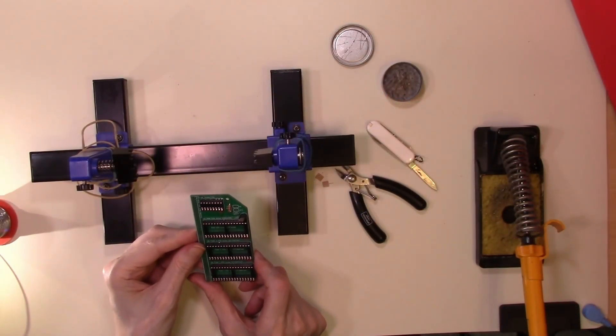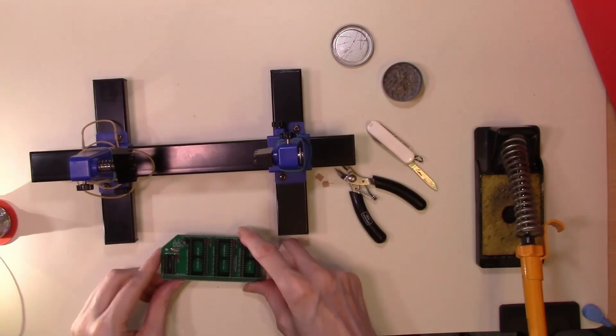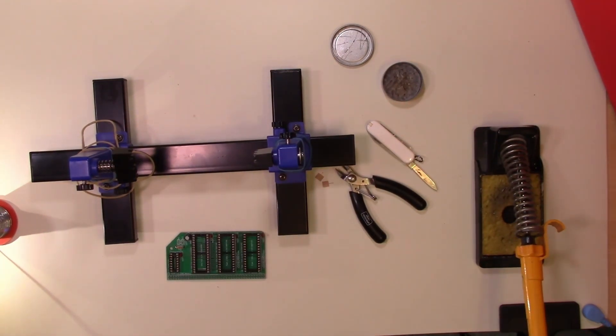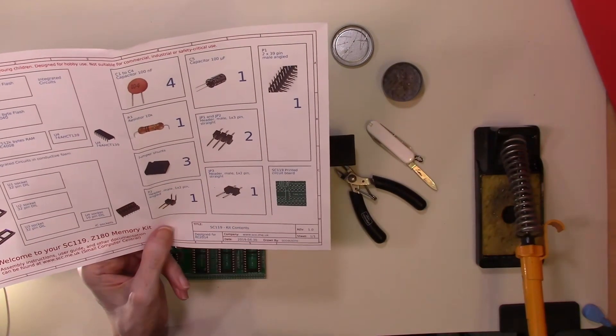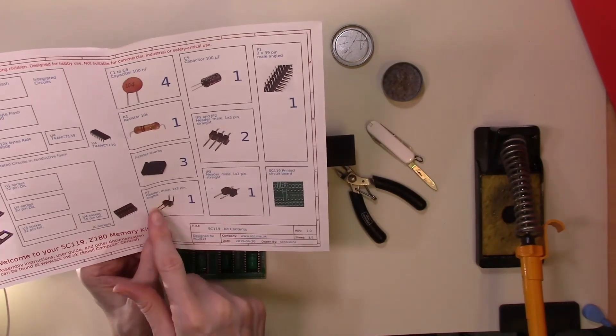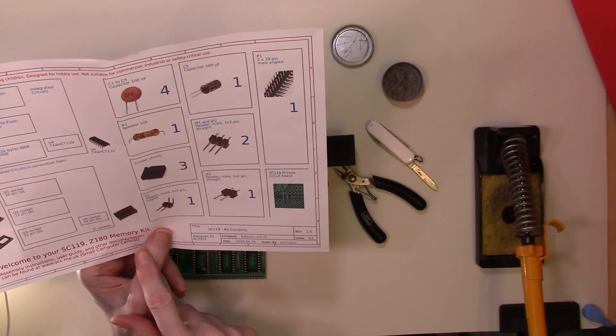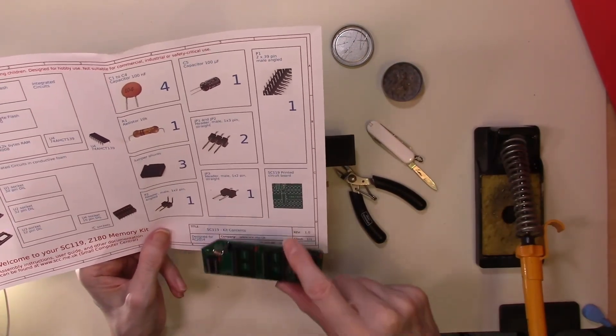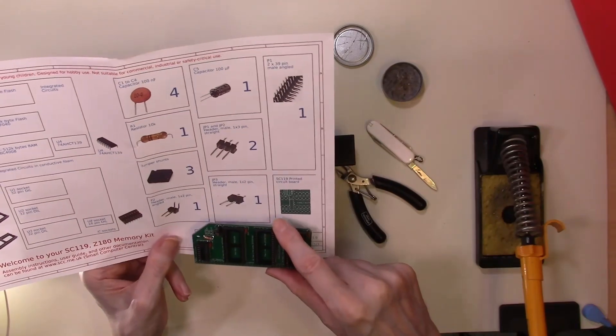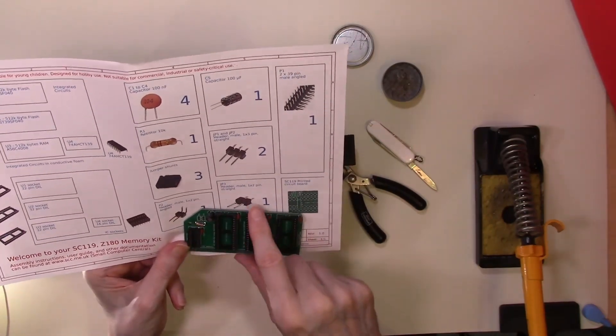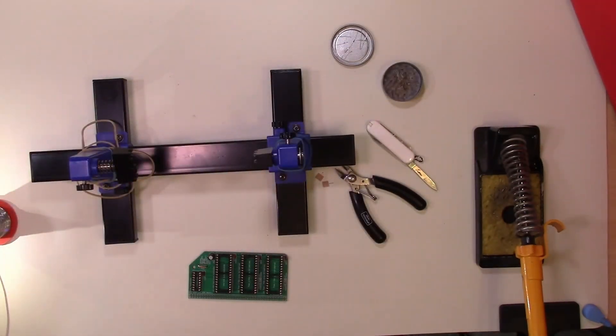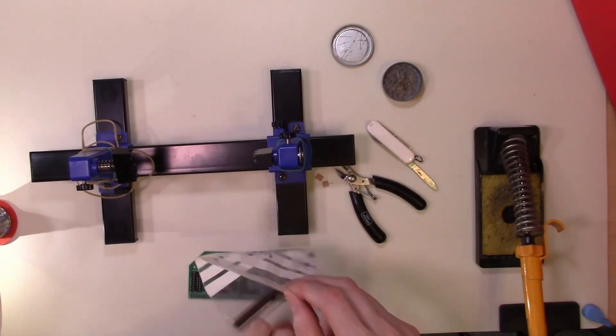Now we do have a couple of jumper plugs to put in place, and then of course our edge connector. So according to our manifest, we have one two-pin header and two three-pin headers to go in, and another single right-angled one, P2, which is this one at the top here. Right, so let's get those connectors and put them in place.